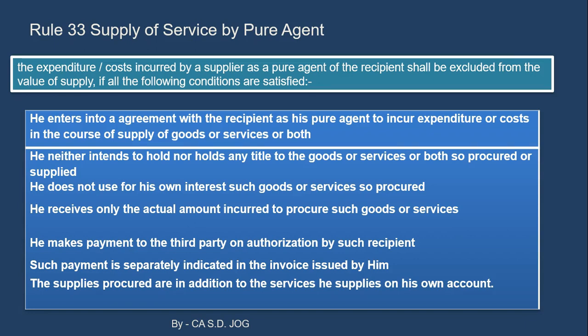Condition 5: he makes payment to a third party on authorization by the recipient — he pays on behalf of the recipient. Condition 6: such payment is separately indicated in the invoice he issues. When he makes payment and recovers it from his customer, the invoice must show his charges separately and the amount paid on the recipient's behalf separately.